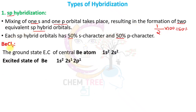An example of SP hybridization is BeCl₂ (or BEF₂ or BeBr₂). In BeCl₂, beryllium is the central atom with atomic number 4. Its electronic configuration in the ground state is 1s², 2s².